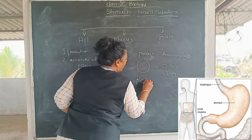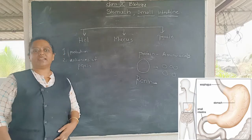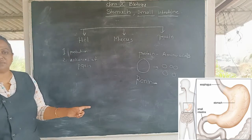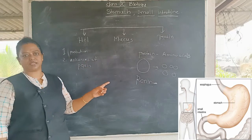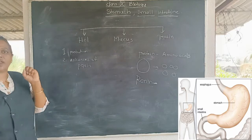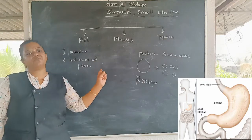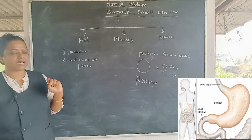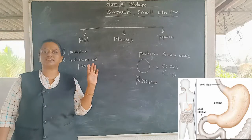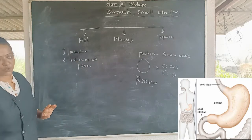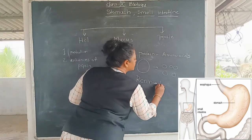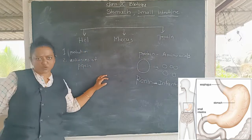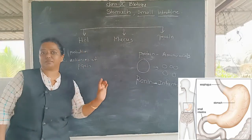In infants, the renin enzyme is secreted instead of pepsin. Renin is less powerful than pepsin. Infants use very little protein, so the less active renin enzyme is sufficient to digest it. Once the child matures, pepsin replaces renin as the primary protein-digesting enzyme.